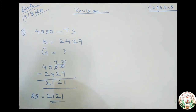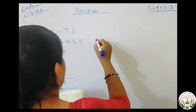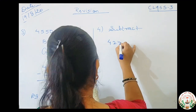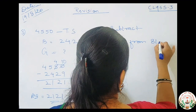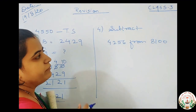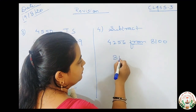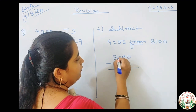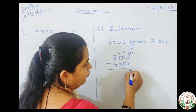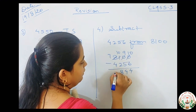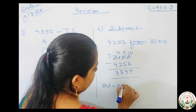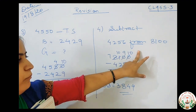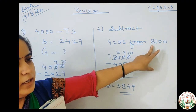Now next is subtraction. Let's take a question: subtract 4256 from 8100. Whenever the word 'from' comes, you will write the second number first. So write 8100 first, then subtract 4256. Take carry: 10 minus 6 is 4. 0 minus 2 not possible, so 10 minus 2 is 8. 7 minus 4 is 3. Your answer is 3844. Remember, for 'from' questions, always write the second number first, then the first number.